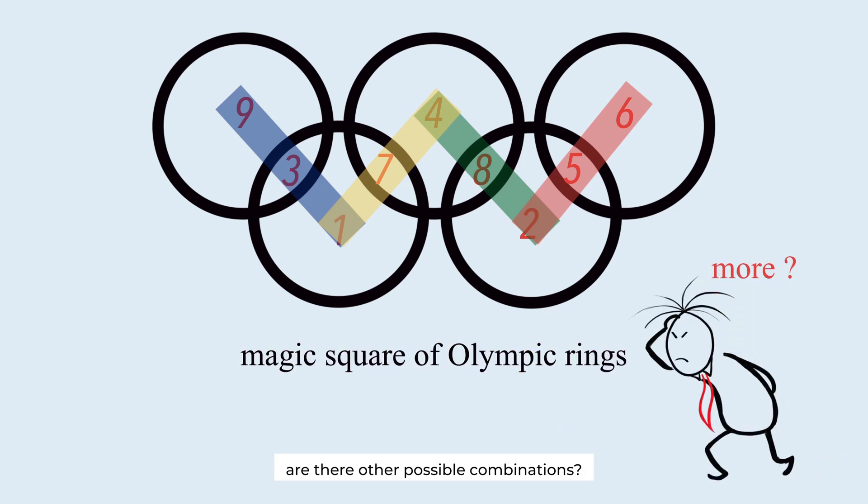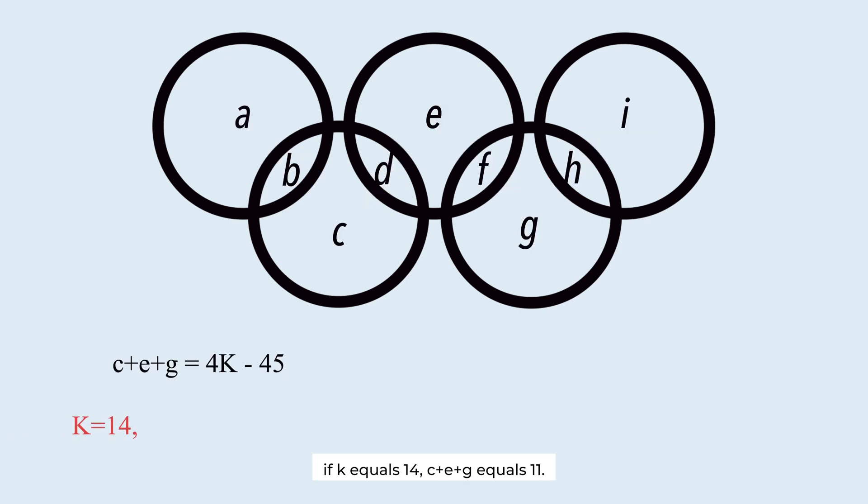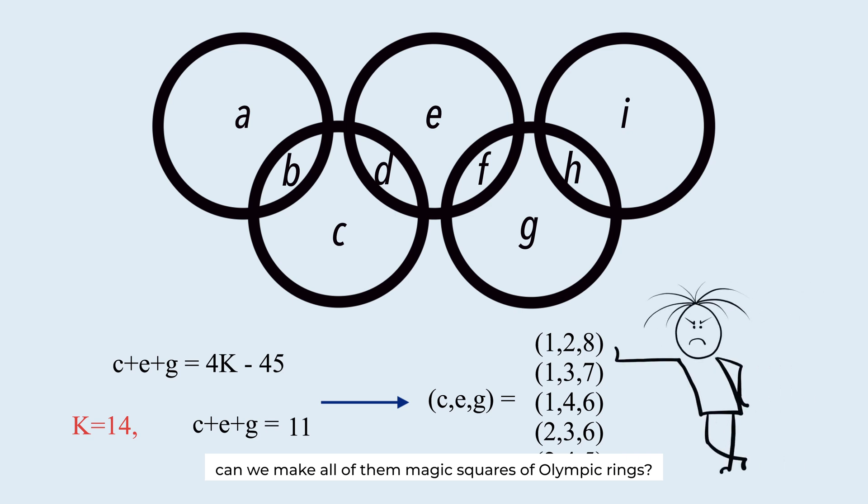Are there other possible combinations? We should verify. If K equals 14, C plus E plus G equals 11. Here are the possible combinations of C, E, and G. Can you make all of them magic squares of Olympic rings?